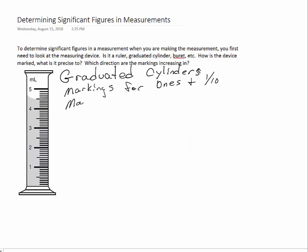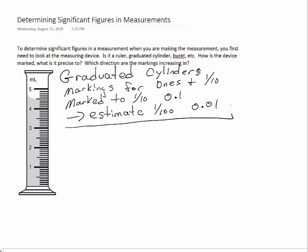We would say that this is marked to the tenths place, or the 0.1 place. Because it's marked to the tenths, if the liquid was in between two of the markings, we would actually be able to estimate to the hundredths place, or 0.01. So we would say that this instrument is precise to whichever place we can estimate to. We're certain about the ones and tenths places, but a little uncertain about the hundredths.